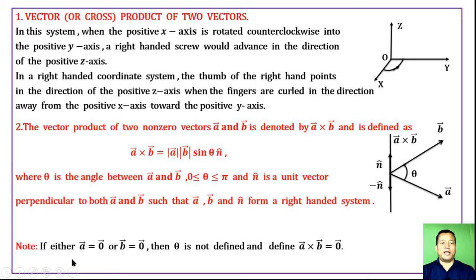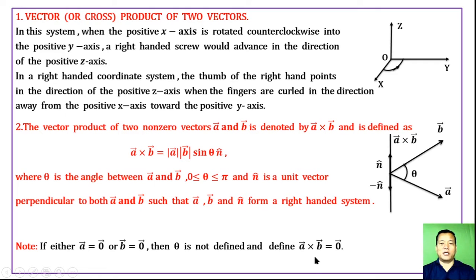If either vector a equals zero vector or vector b equals zero vector, then theta is not defined. In that case, we define a cross b equal to zero vector. If vector a and vector b are both zero vectors, then their cross product is the zero vector.